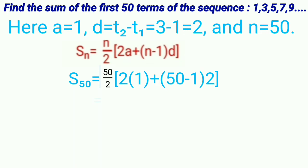50 by 2 is equal to 25. 2 times 1 is 2. 50 minus 1 is 49. So, 25 into 2 plus 49 into 2 is equal to 25 into 2 plus 98. 49 into 2 is 98.